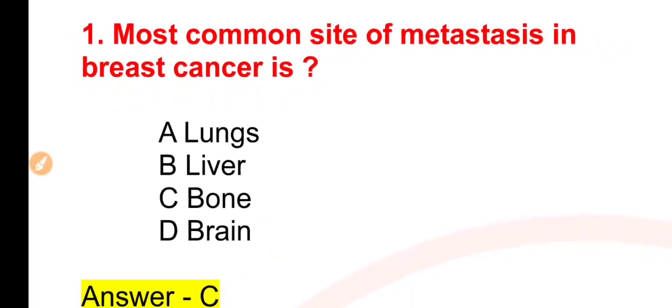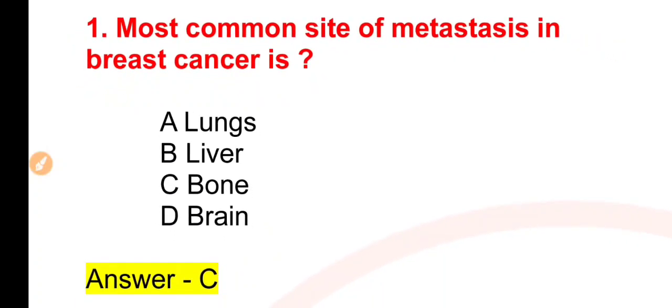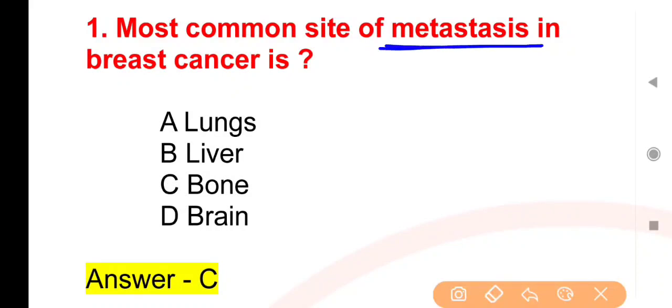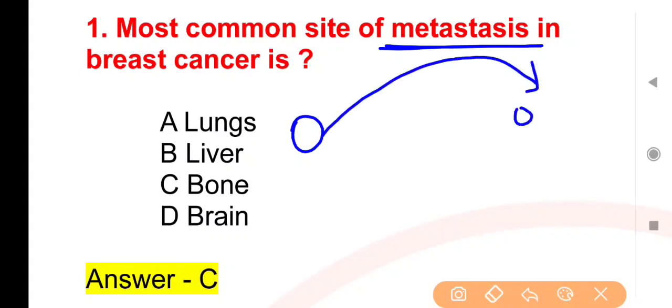The right answer is option C — it is Bone. Metastasis ka matlab hota hai ki cancer body ke ek hisse se nikal kar body ke kisi doosre bhag tak pahunch jaye. Yeh condition metastasis kehlati hai.